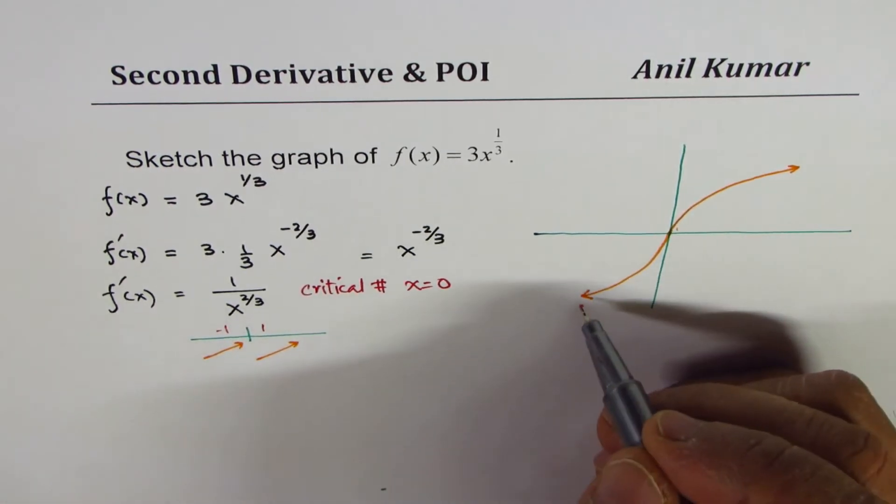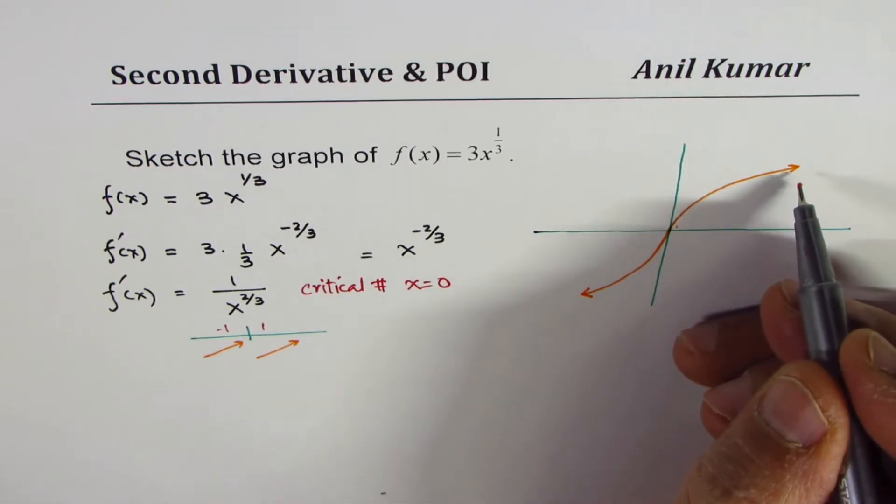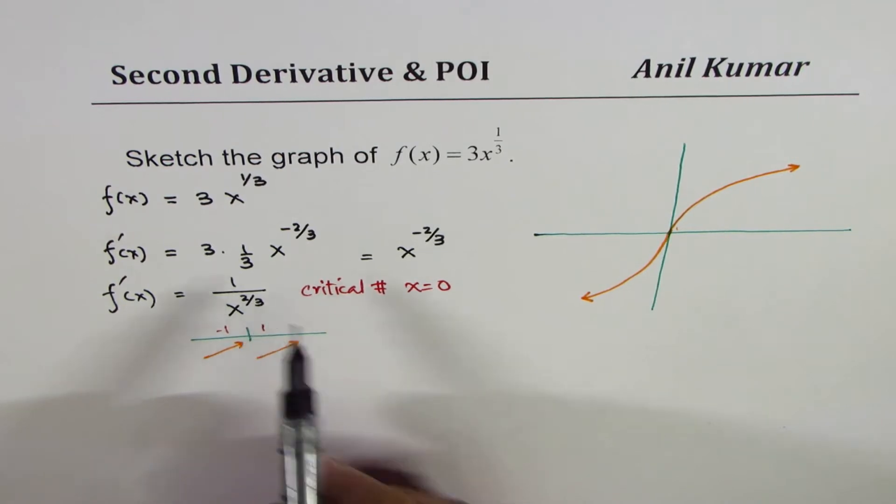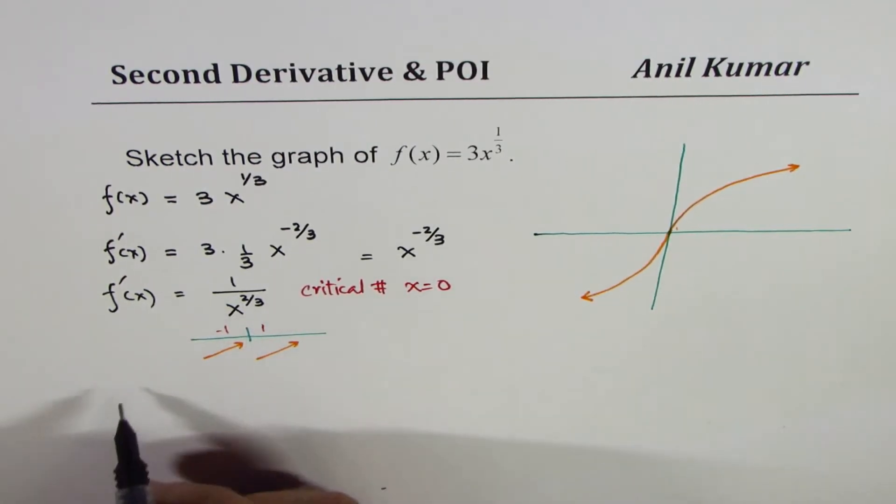Now, which can be verified here also. This function is always increasing. So there is no maximum or minimum for this particular graph at x equals to 0.